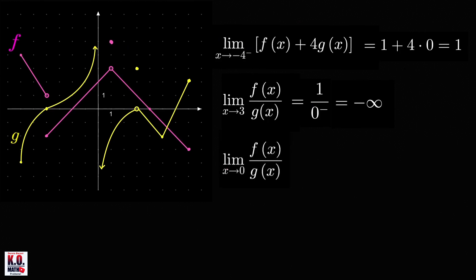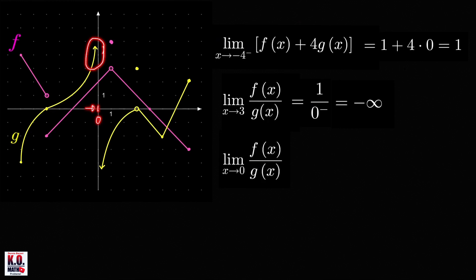Now let's find the limit of f(x) over g(x) as x approaches 0. So this is our x equals 0 and we have to approach this from both sides. If we look at the graph of f, the points are getting closer and closer to this point — the y-intercept of the graph of f — from both sides. Therefore, the limit of f is equal to this y-intercept, which is equal to 2. Now if we look at the graph of g, when we approach 0 from the left, the graph increases without bound, which means the function values approach infinity.